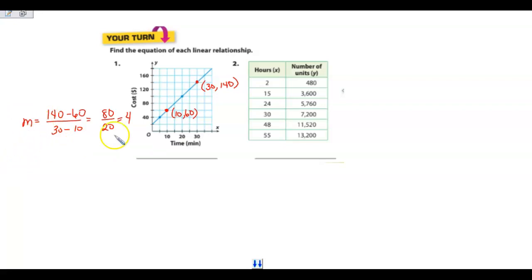I'm going to pick any point. Let's do the 10, 60. So 60 is my y. 4 is my slope. 10 is my x. That's 40. So I'm going to subtract 40 from both sides. B equals 20. So I have my y-intercept. I have my slope. My equation is going to be y equals 4x plus 20.